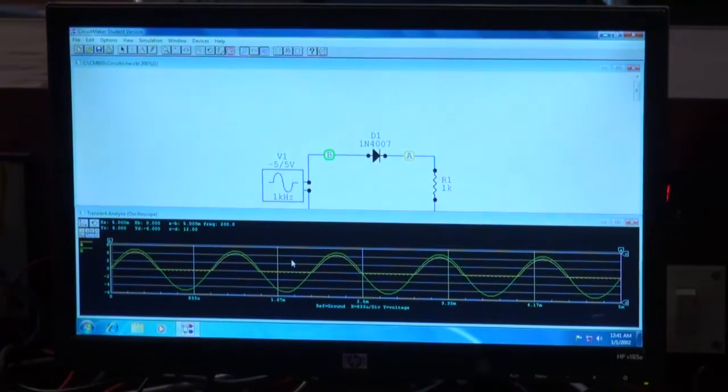So here we can see that the green signal is the input and the yellow signal that you are getting is the output waveform. So this way, we can design, develop any electronic circuit and can see its simulation.